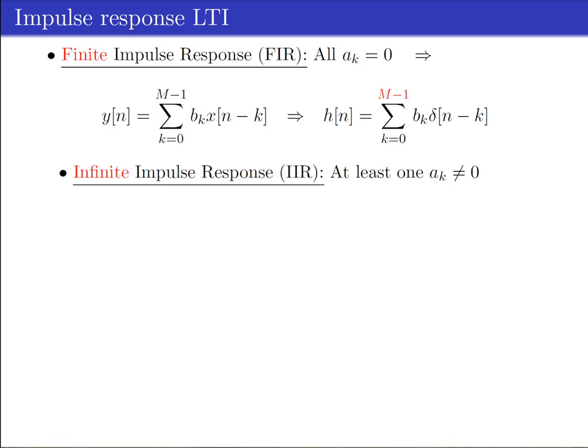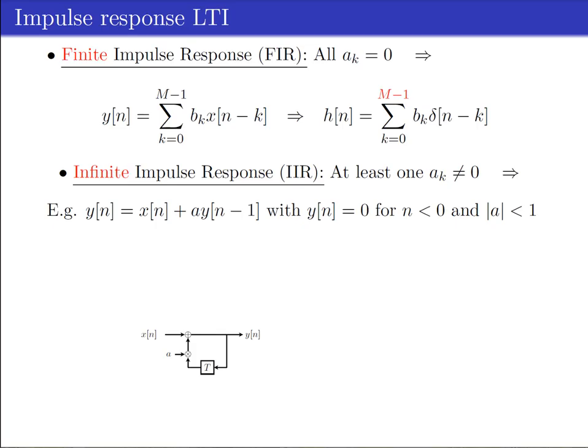In case at least one of the feedback coefficients is not equal to zero, the impulse response can have infinite length. This can be shown by the following simple example as depicted in the figure, which can be described by the difference equation: yn is xn plus a times y(n minus 1). This system has one feedback loop and one feedback coefficient, denoted by a, which is assumed to have an absolute value smaller than 1. Furthermore, we assume the output yn is equal to 0 for all indices n smaller than 0.